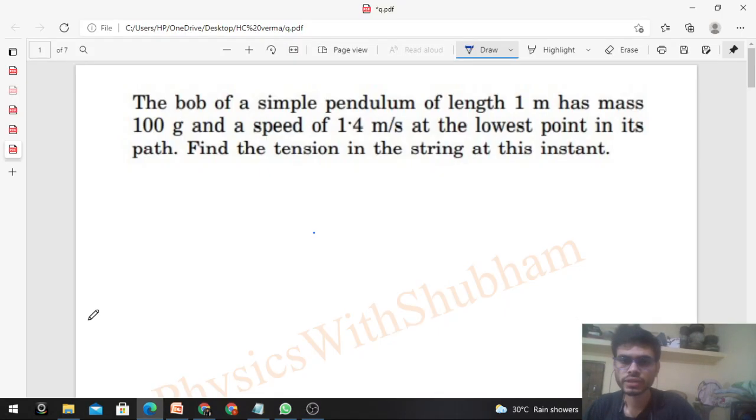Okay, hi everyone. Today we will discuss this interesting problem. The bob of a simple pendulum of length 1 meter has mass 100 grams and a speed of 1.4 meters per second at the lowest point in its path. Find the tension in the string at this instant.